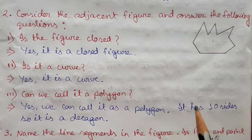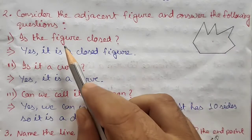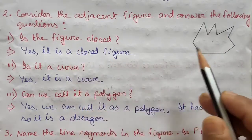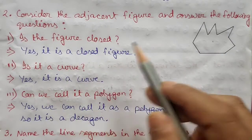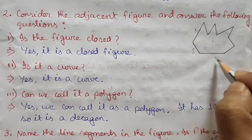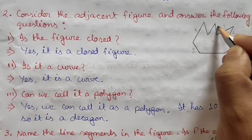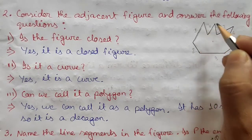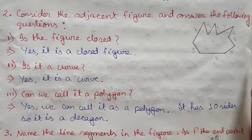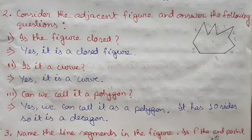Now, can we call it a polygon? A polygon is a closed figure which has more than three sides. This figure is closed, and counting its sides: one, two, three, four, five, six, seven, eight, nine, ten — it has ten sides. So yes, it is a polygon; specifically, it is a decagon.